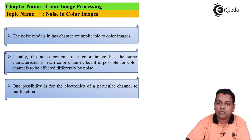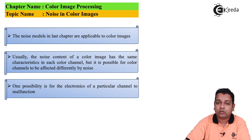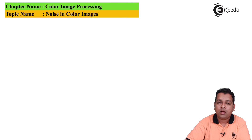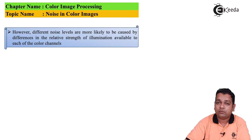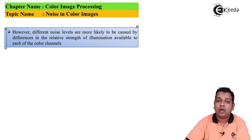Usually the noise content of a color image has the same characteristic in each color channel, but it is possible for color channels to be affected differently by noise. One possibility is for the electronics of a particular channel to malfunction. However, different noise levels are more likely to be caused by differences in the relative strength of illumination available to each of the color channels.